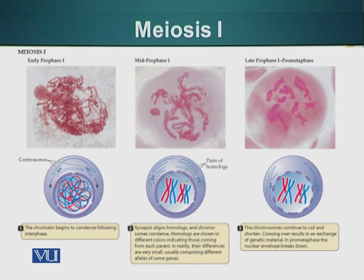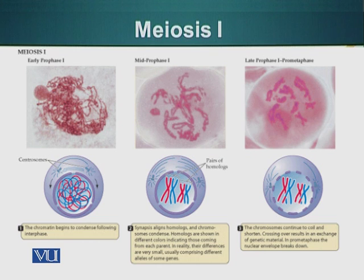In the next stage, late prophase 1, the nuclear envelope starts to disintegrate and the chromosomes become available for connection with the kinetochore microtubules. Another important feature of late prophase is that sister chromosomes exchange parts — a process called crossing over. For example, you can see part of the blue chromosome is now red, and part of the red chromosome is now blue. Because of this process, we can increase genetic diversity.